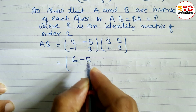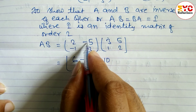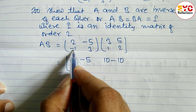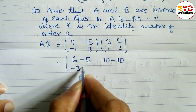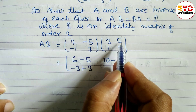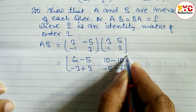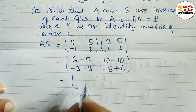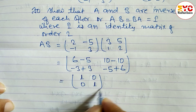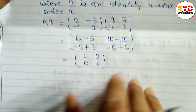First row, second column: 2×5 = 10 minus 5×2 = minus 10. Second row, first column: -1×3 = -3 plus 3×1 = 3. Second row, second column: -1×5 = -5. Solving this we get: 6 minus 5 = 1, 10 minus 10 = 0, 0, and 1.